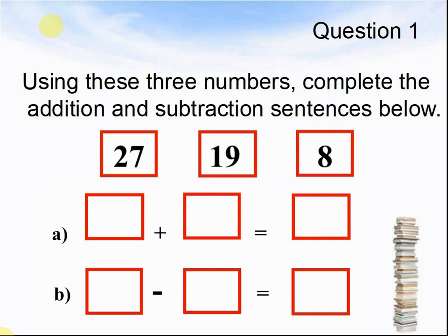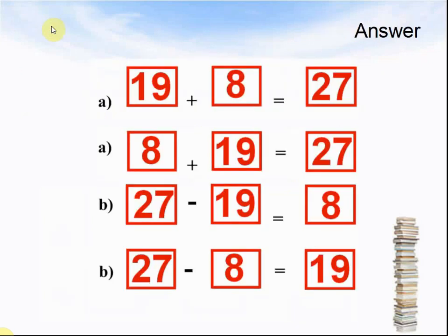Here comes the answer. The answers for A are: 19 plus 8 equals 27, or 8 plus 19 equals 27. The two answers for B are: 27 minus 19 equals 8, or 27 minus 8 equals 19.